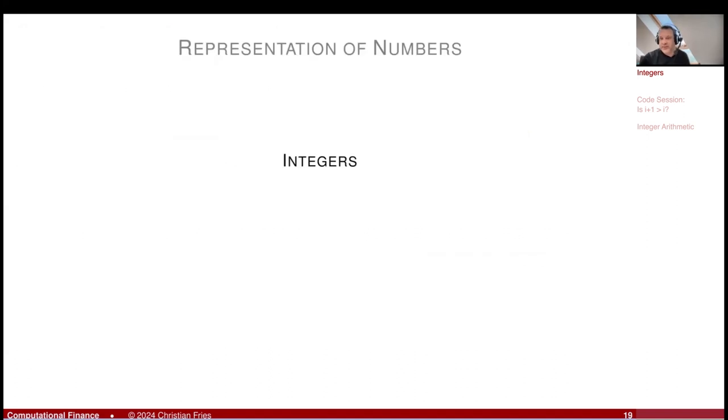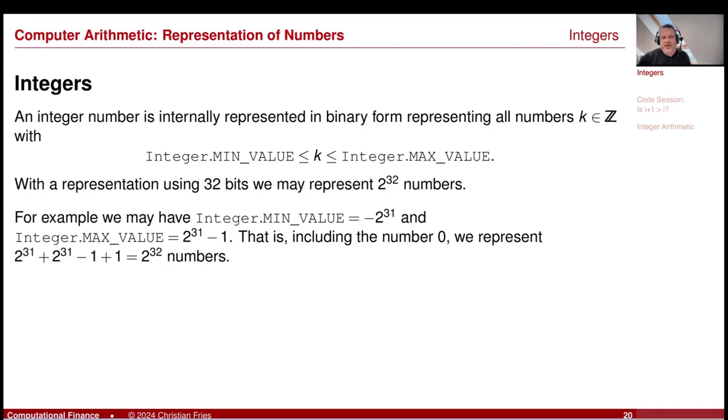Let's start with integers. So an integer number is internally represented in binary form, representing all integers k in Z that are in a certain interval. So actually here, my writing integer dot min value, integer dot max value is code. As you can sometimes guess from the font. So we can just ask, for example, the computer, what is the smallest number you can represent? What is the largest number you can represent? Maybe I just try this.